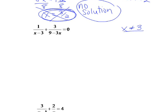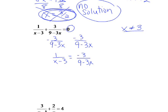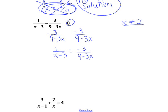Now, when we look at this, we have a fraction plus a fraction equals 0, so it's not a proportion like the last one. However, since this is 0, we can subtract 3 over 9 minus 3x from both sides. And what do we end up with? 1 over x minus 3 equals negative 3 over 9 minus 3x. Now we have a proportion, and we can go ahead and cross multiply to solve it. Cross multiplying is going to be the easiest method, so if we can make it into a proportion, we're going to do that.